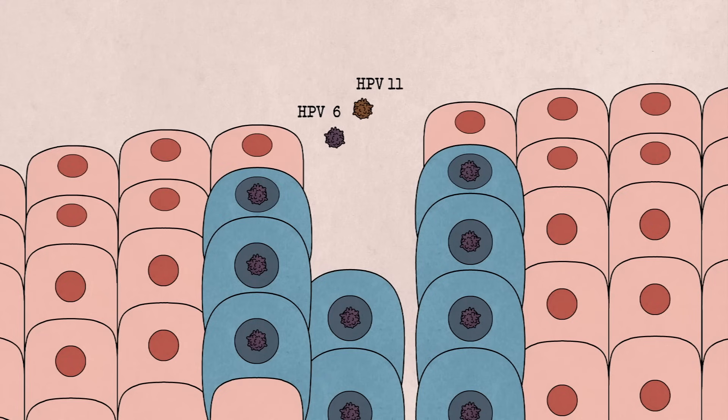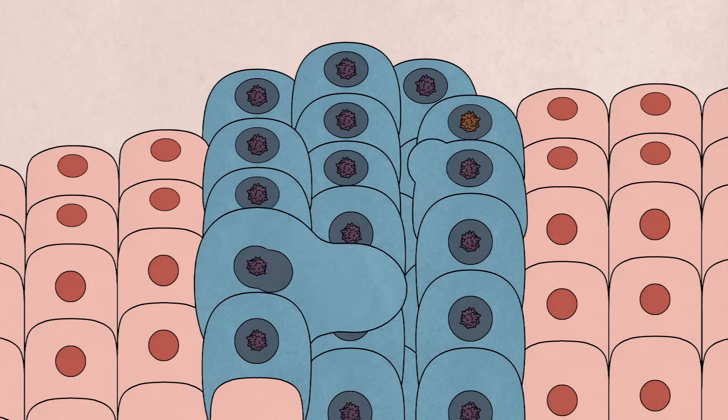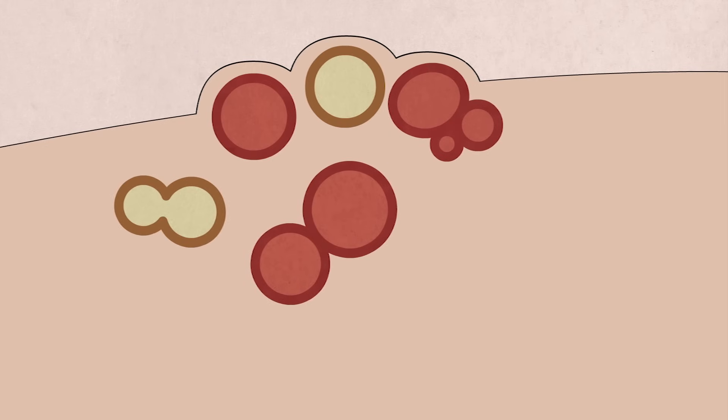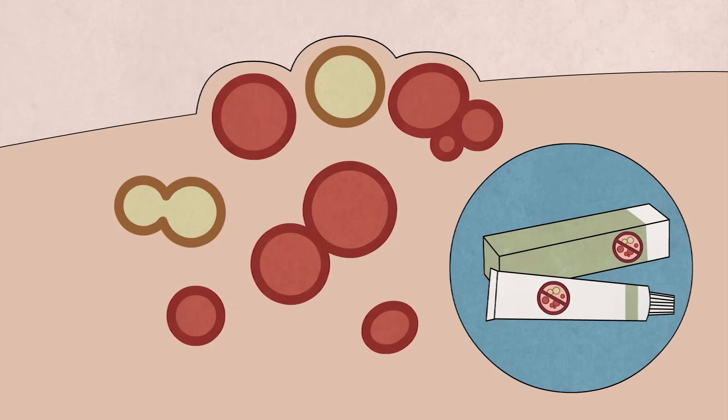Certain other strains, like HPV-6 and 11, cause abnormalities in the cells of the infected tissue, which can develop into genital warts. While these are infectious and require treatment, usually with topical creams, wart-causing strains don't create longer-term damage.